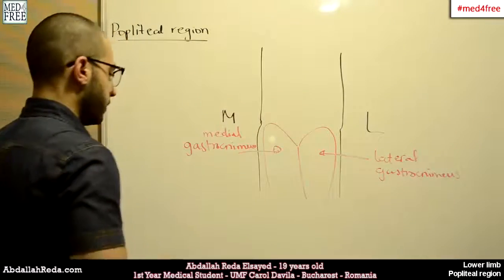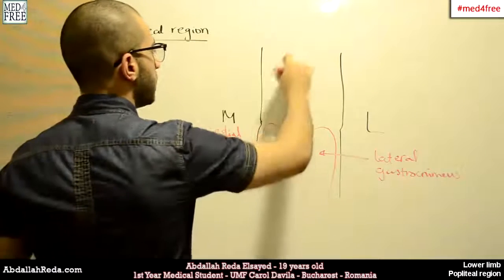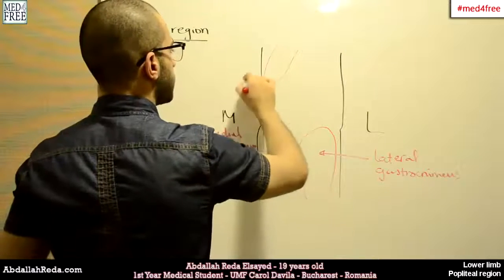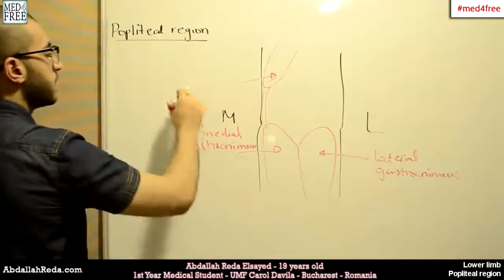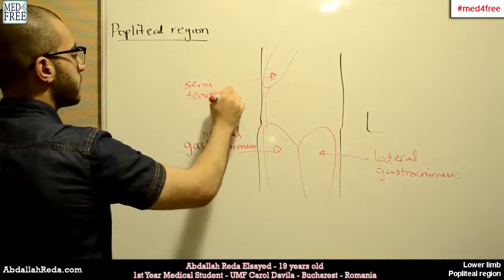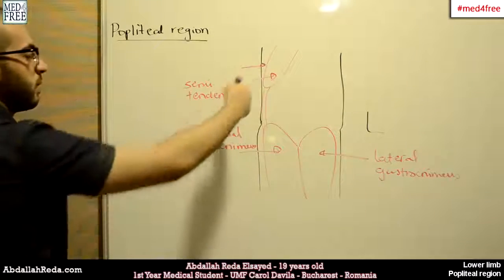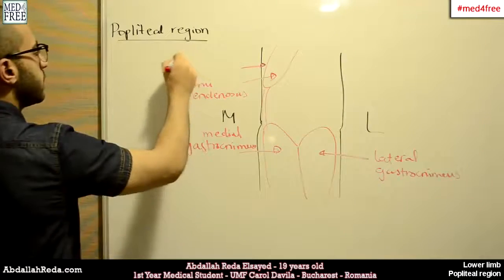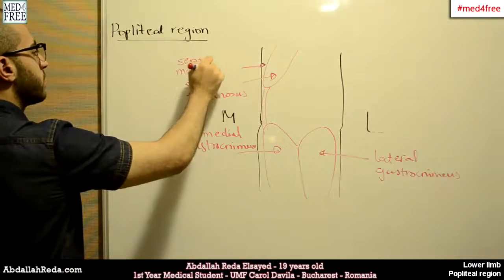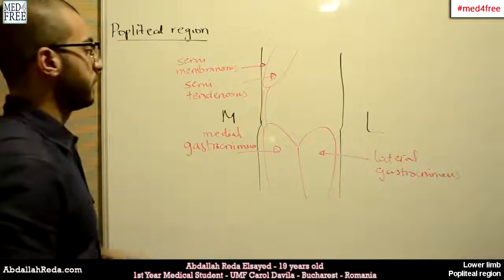The upper border is formed by semitendinosus muscle here. Also formed by semimembranosus, which is kind of anterior to that muscle. So we have semimembranosus also contributing to the formation of the limits of the popliteal region.